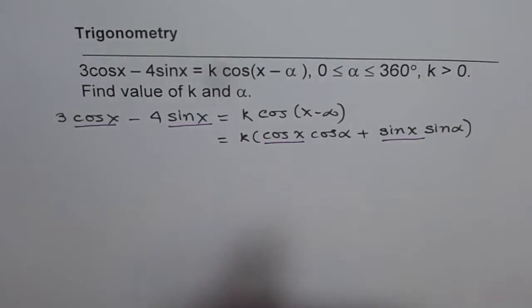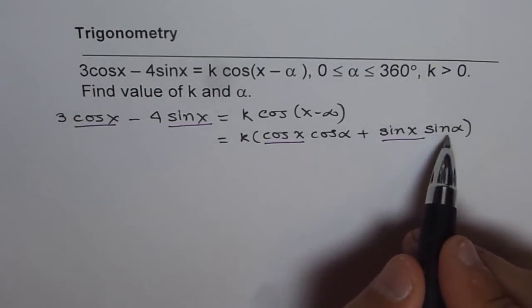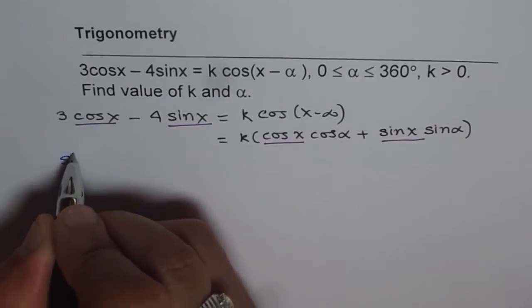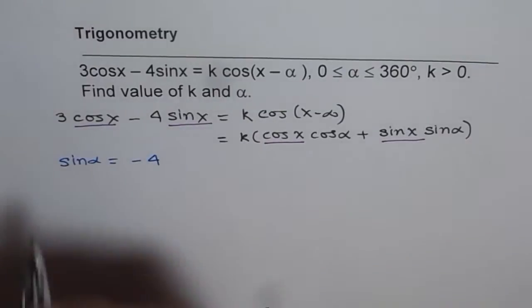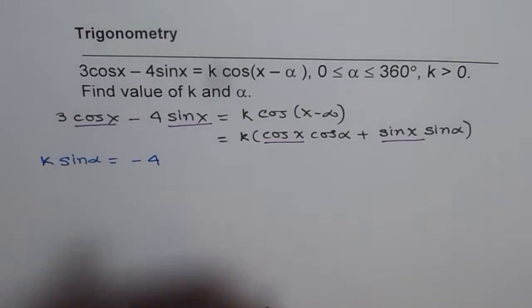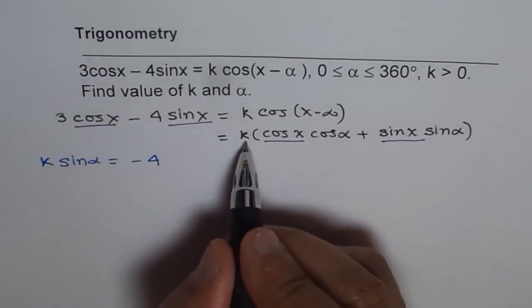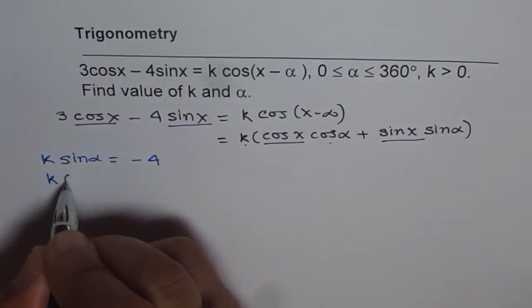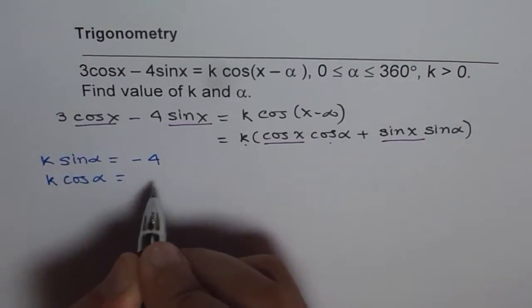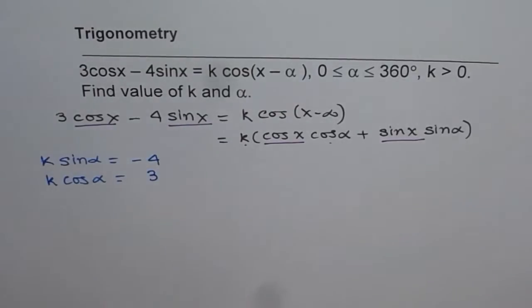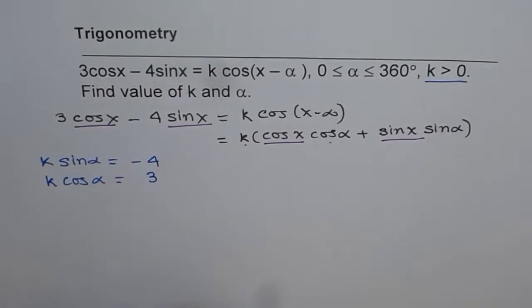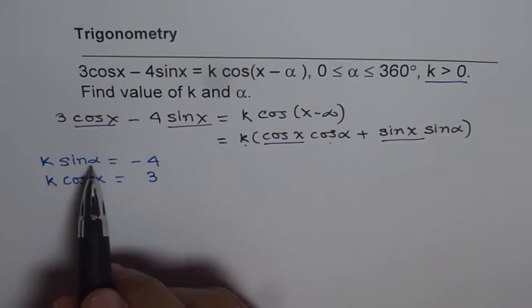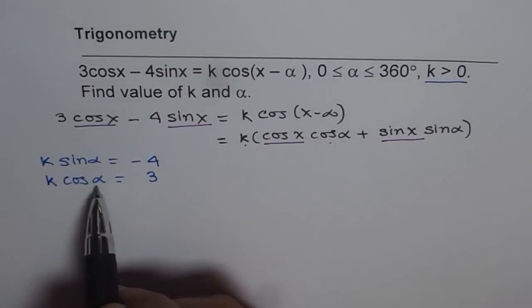So comparing these two equations, we can write k times sin alpha should be equal to minus 4. Similarly, k times cos alpha should be equal to 3. That is what we get. Now since k is positive, k is greater than 0, that means sin alpha should be negative and cos alpha should be positive.